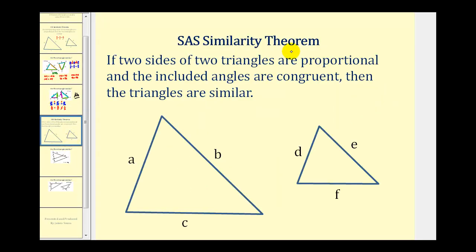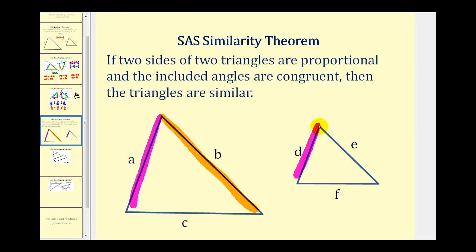Now let's talk about side-angle-side similarity. If two sides of two triangles are proportional and the included angles are congruent, then the triangles are similar. For example, if the ratio of A to D equals the ratio of B to E, and the included angle formed by those two sides is congruent, the two triangles are similar. It's important to remember that the congruent angles must be formed by the sides that are proportional.